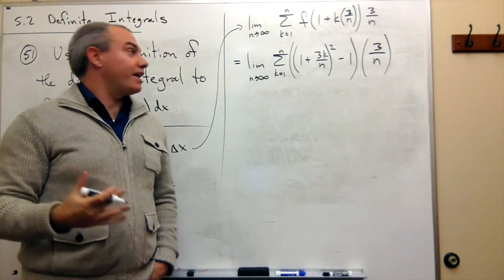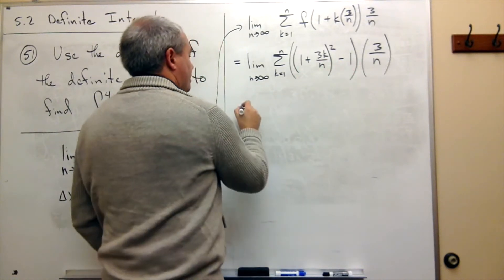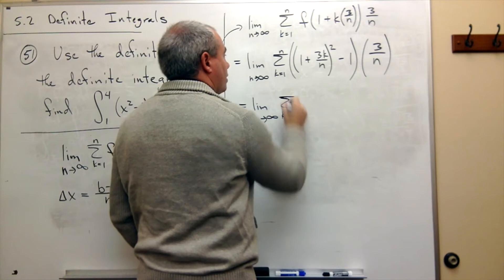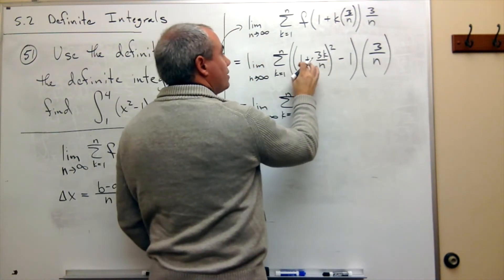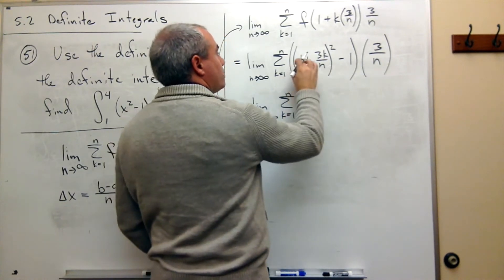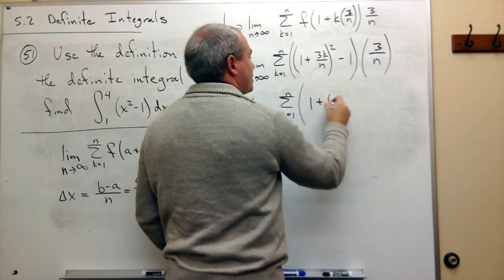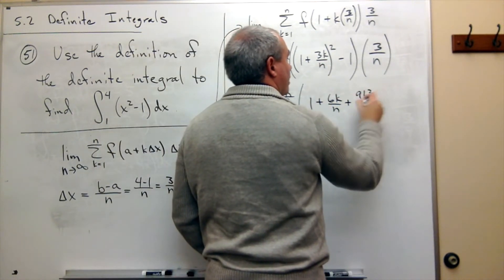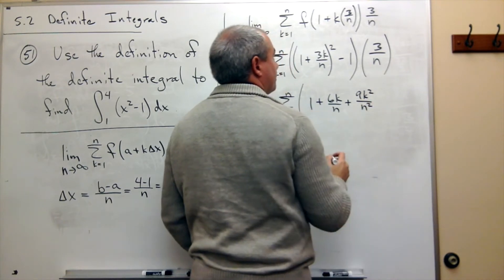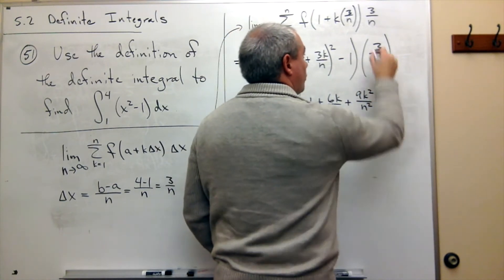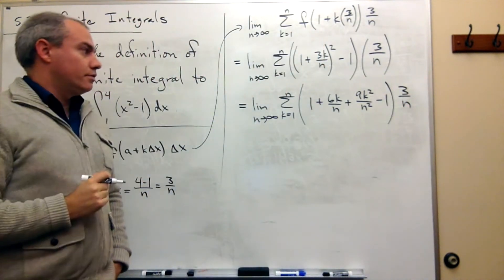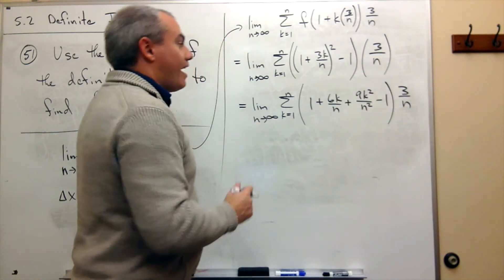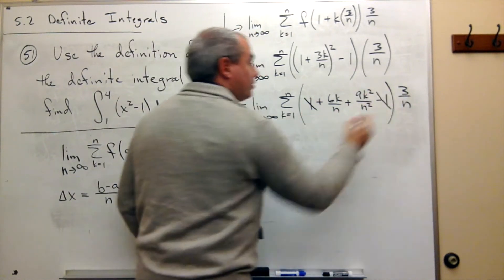Let's simplify and expand this piece. I still have limit as n goes to infinity of the sum k going from 1 to n. If I square this, I get 1 squared which is 1, plus 2 times the first times the second which is 6k over n, plus the second one squared which is 9k squared over n squared. Then I subtract 1 and multiply by 3 over n. I've got a positive one and a negative one — those cancel.